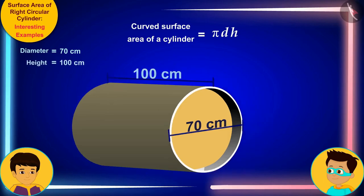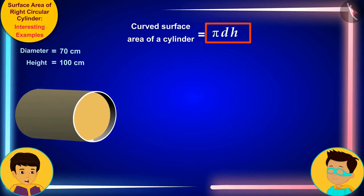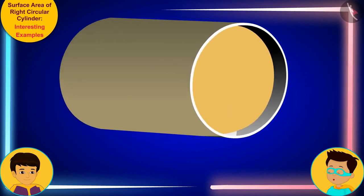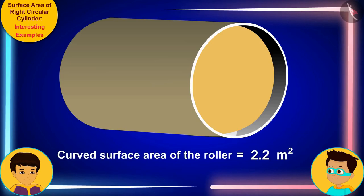In this way, the roller here is cylindrical and has a horizontal orientation. Therefore, the length of the cylindrical roller will be equal to its height. Here, let me solve this by substituting the diameter of the roller, 70 centimeters instead of d, and length of the roller, 100 centimeters instead of h in this formula.